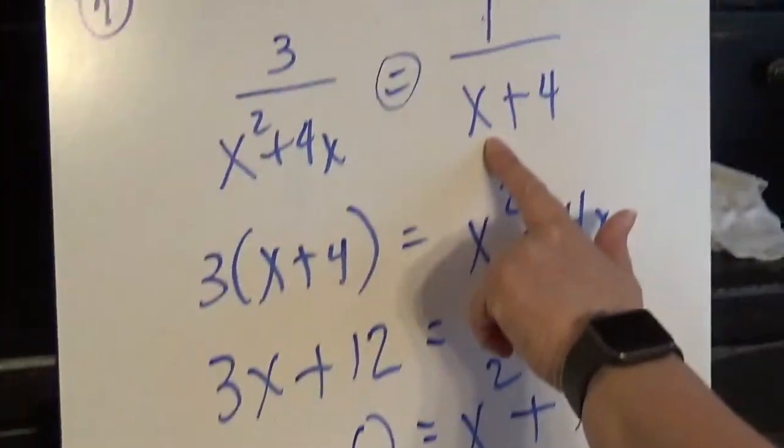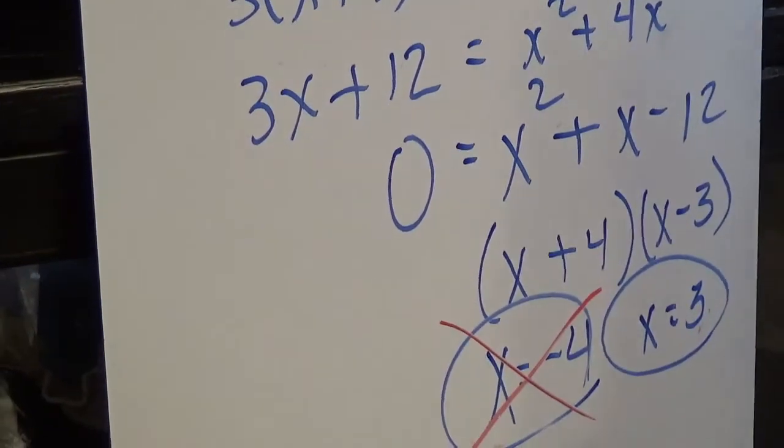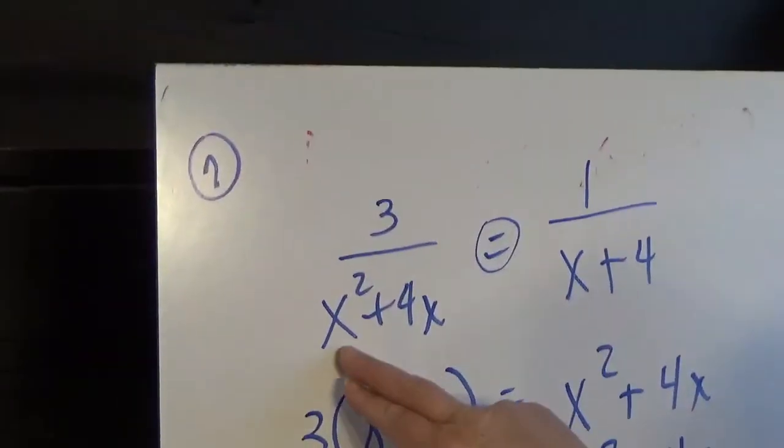I noticed right from the beginning, negative 4 plus 4 is 0. So that one's out. 3 is okay here. Let's try 3 here.